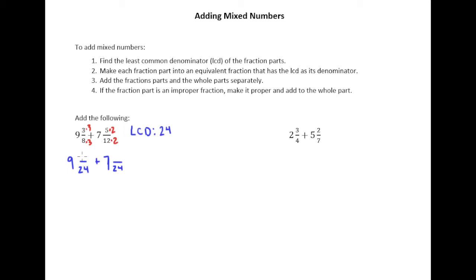So I end up with 9 and 9 twenty-fourths plus 7 and 10 twenty-fourths. And then I can just add 9 plus 7, which is 16, 9 plus 10, which is 19 twenty-fourths, so 16 and 19 twenty-fourths.